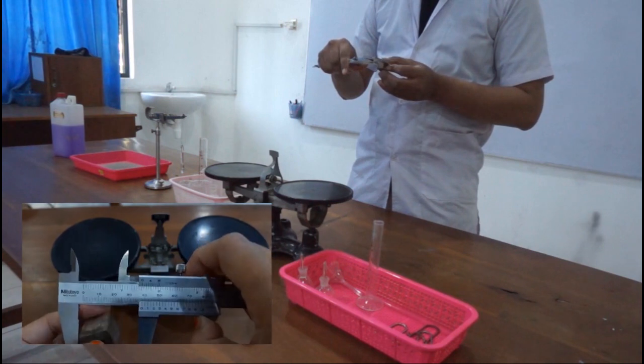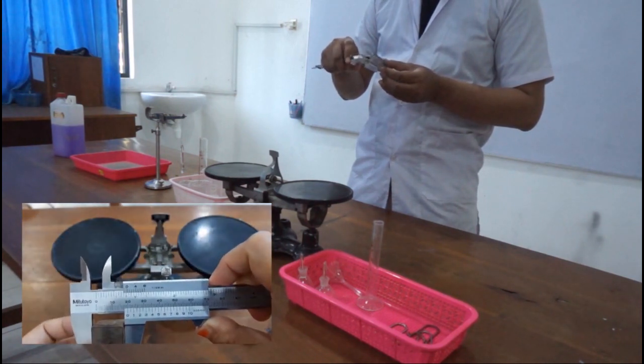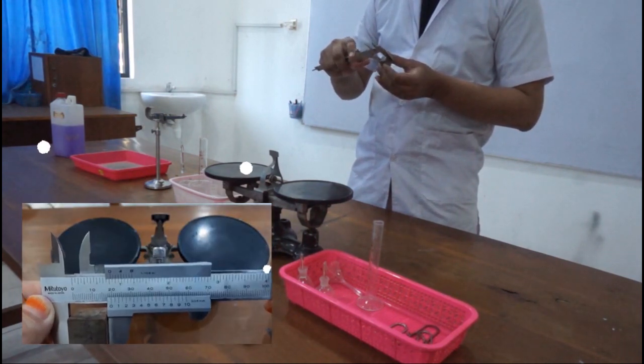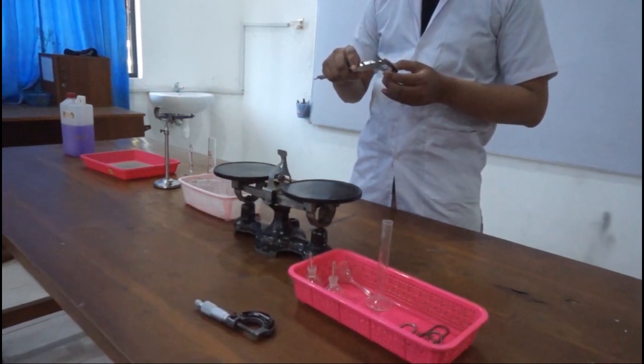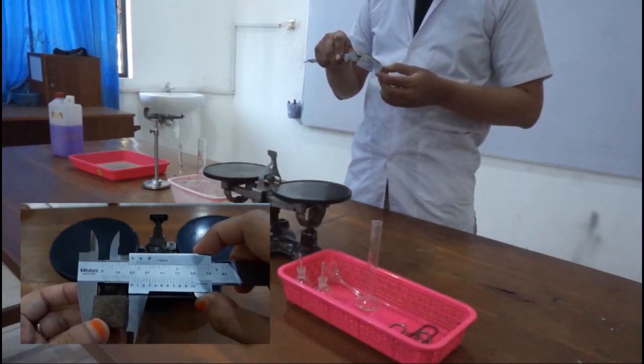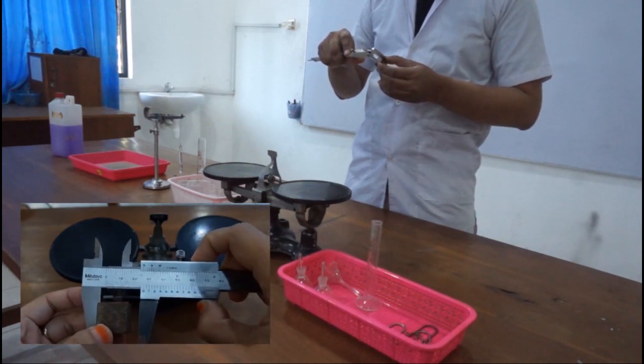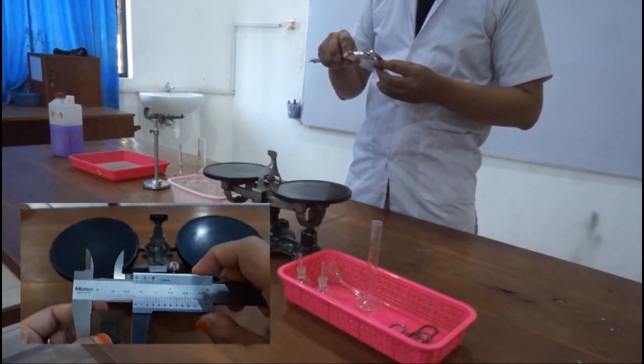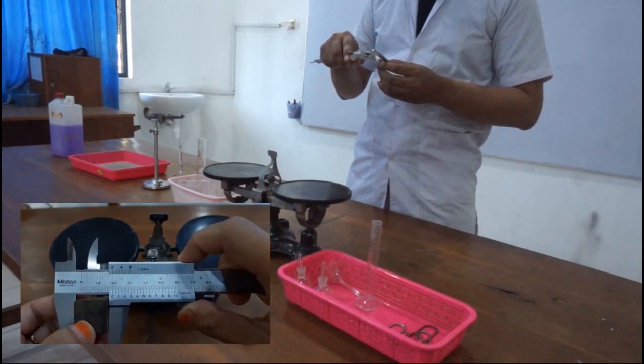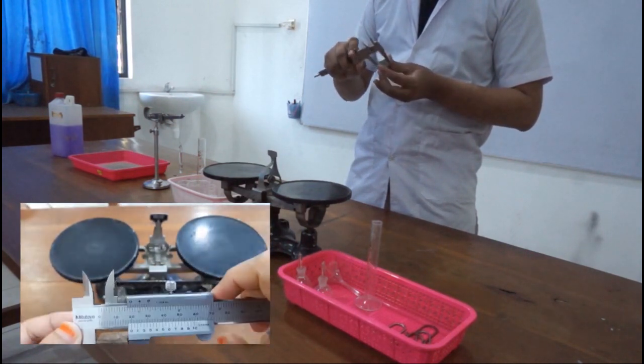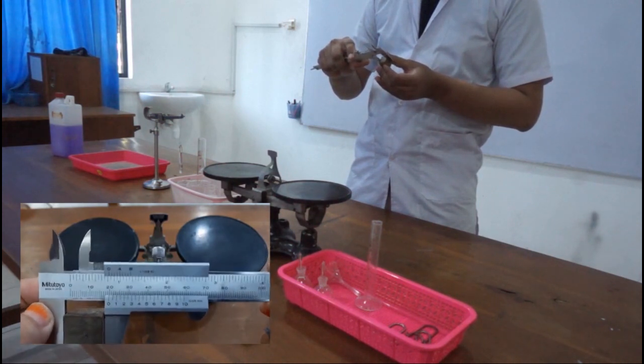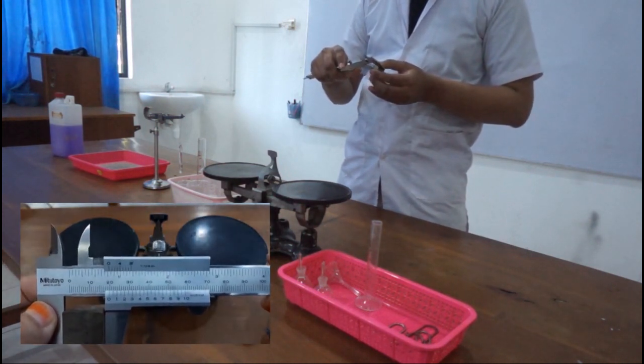You can use the vernier caliper in this regard. This is the example of how you measure the width of your object. For example, the wooden object you put in between the bottom jaws on your vernier caliper, and then you read through the vernier scales regarding relatively to the main scales on your sliding through. This is the first step you need to determine and take the data of your object, which is the wooden cube.